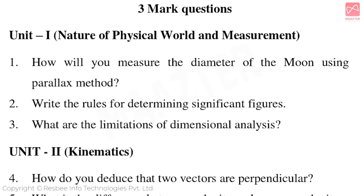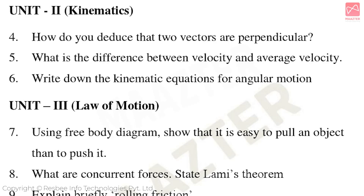Now the 3-mark section. Unit 1 Natural Physical World and Measurement — important three-mark questions: How will you measure the diameter of the moon using the parallax method? Write the rules for determining significant figures. What are the limitations of dimensional analysis? Unit 2 Kinematics: How do you deduce that two vectors are perpendicular? What is the difference between velocity and average velocity? Write down the kinematic equations for angular motion.